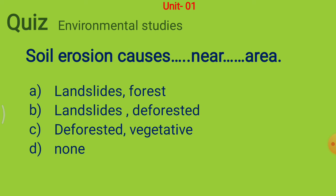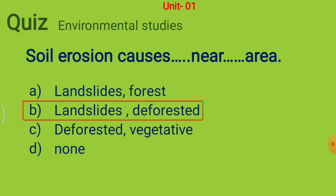Soil erosion causes dash dash dash near dash dash dash area. Options are landslides near deforested area, forested area, vegetative area, or none. The answer is landslides near deforested area.